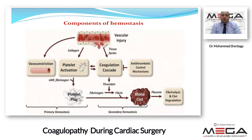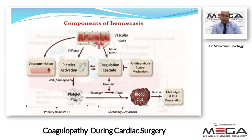In this figure, components of hemostasis include vascular constriction and platelet activation forming primary hemostasis, then the coagulation cascade — prothrombin to thrombin, fibrinogen to fibrin — to form what's called a platelet blood clot, followed by antithrombotic control mechanisms such as fibrinolysis and clot degradation or clot lysis.